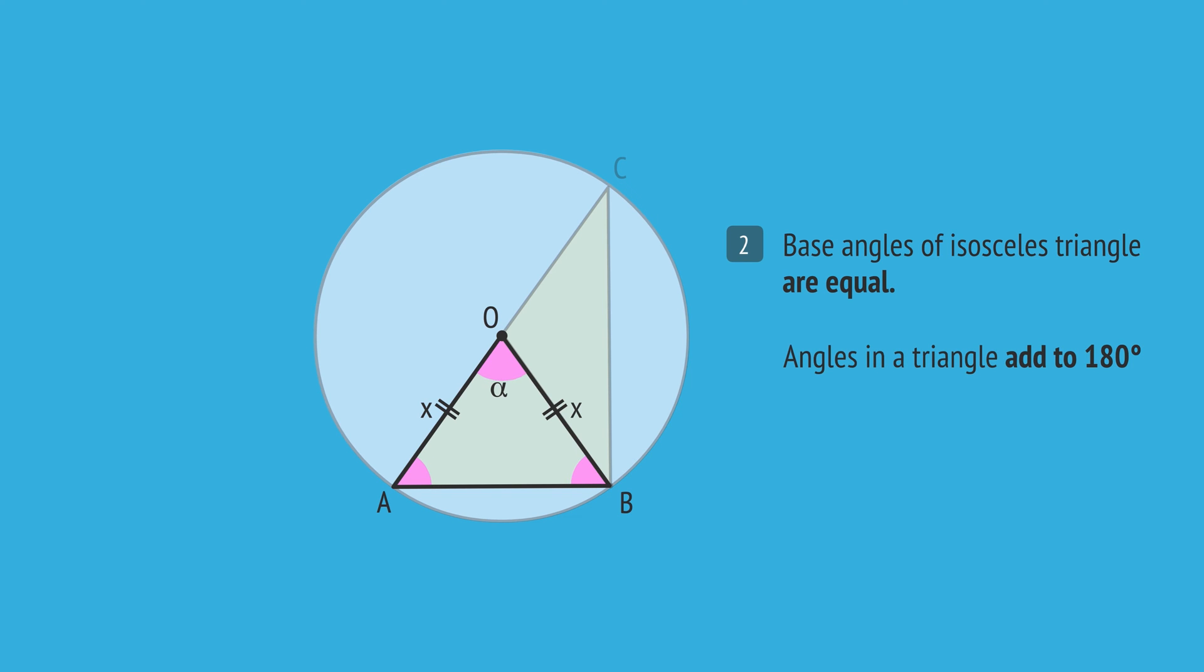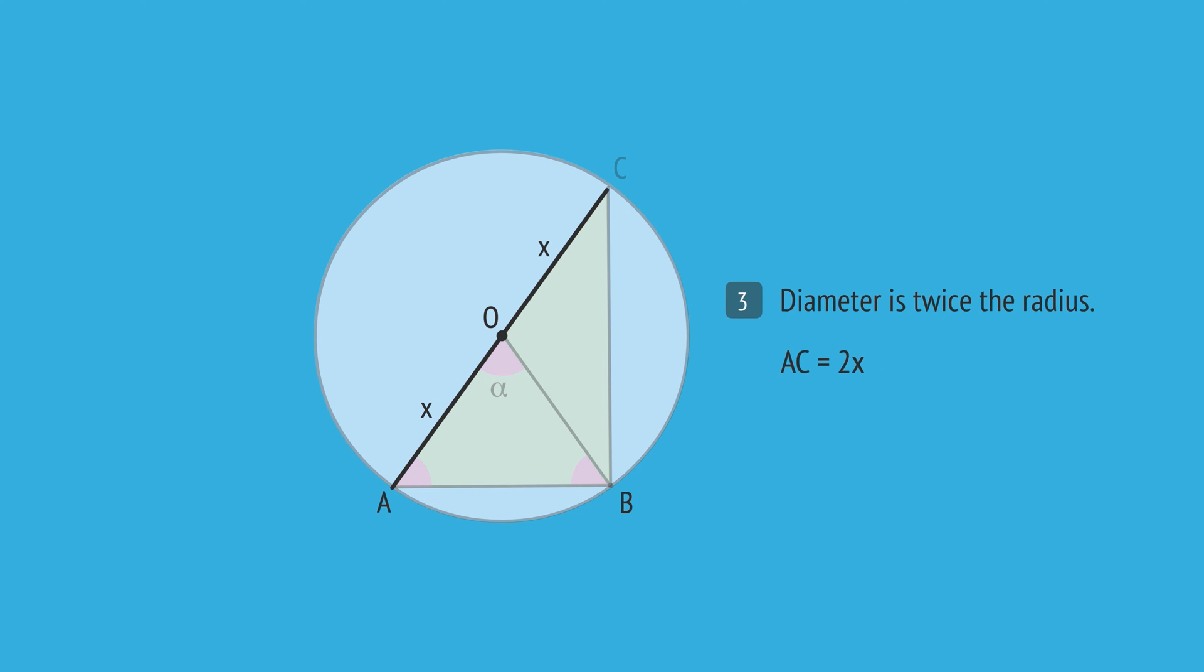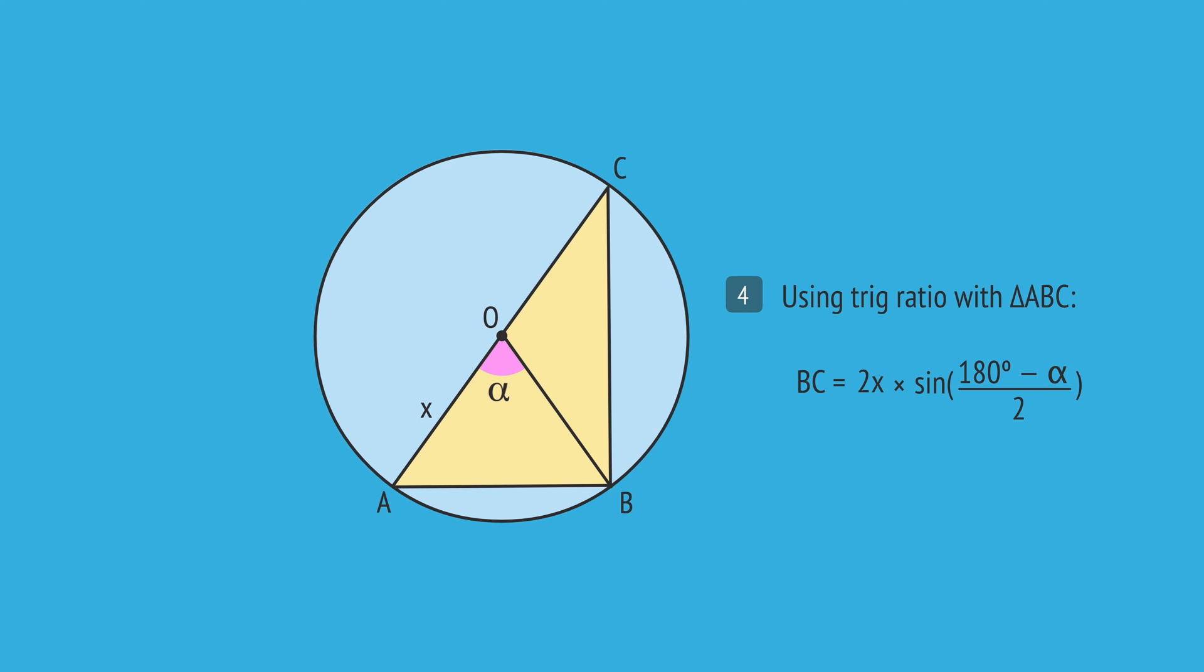And since the angles in a triangle add to 180 degrees, we can subtract alpha from 180 degrees and divide by 2 to give this expression for angle OAB. We know the diameter AC is 2x. We can now write a trig ratio for this angle using these sides, specifically the sine ratio. The sine of the angle equals BC over 2x. Multiply both sides by 2x and we get this expression for side BC in terms of alpha and x.